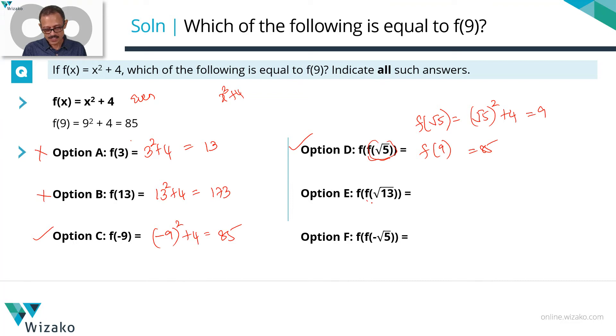Move on to E. This is again a recursive function f(f(√13)). So step one, let me compute f(√13). f(√13) is √13 squared plus 4 which is equal to 17. So now f(√13) is 17. Instead of this part we can rewrite it as 17. f(17) will be equal to 17 squared plus 4, 289 plus 4 which is 293 which is not the same as f(9).